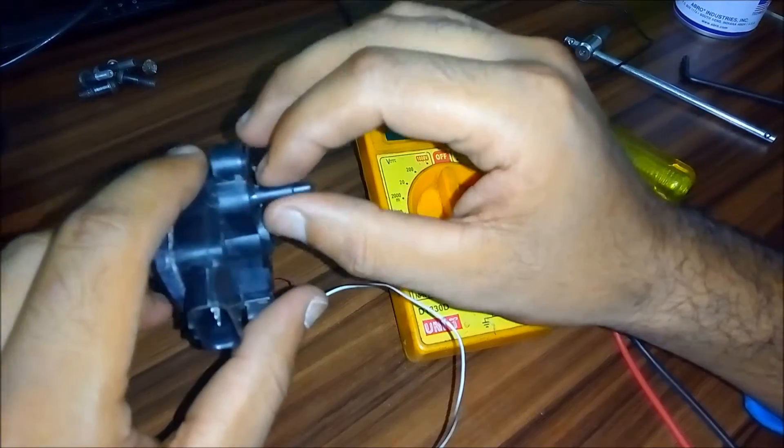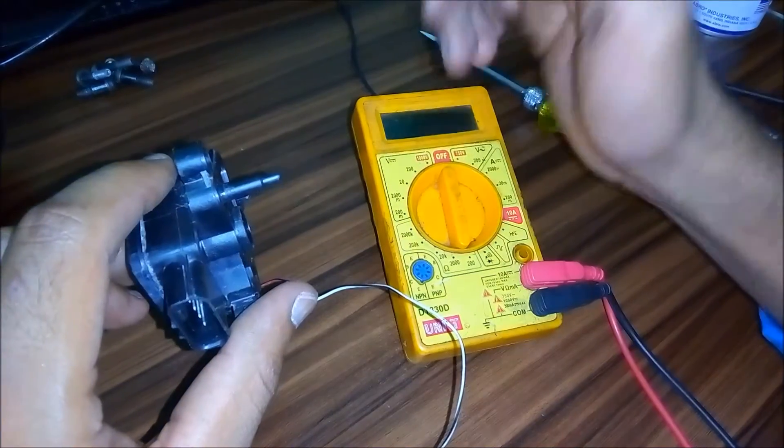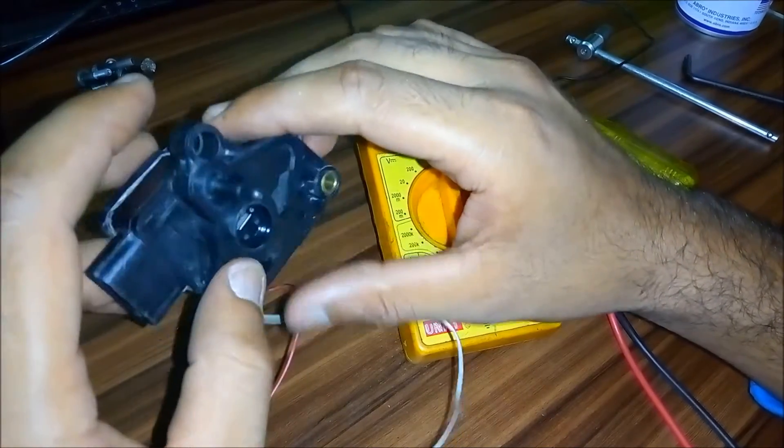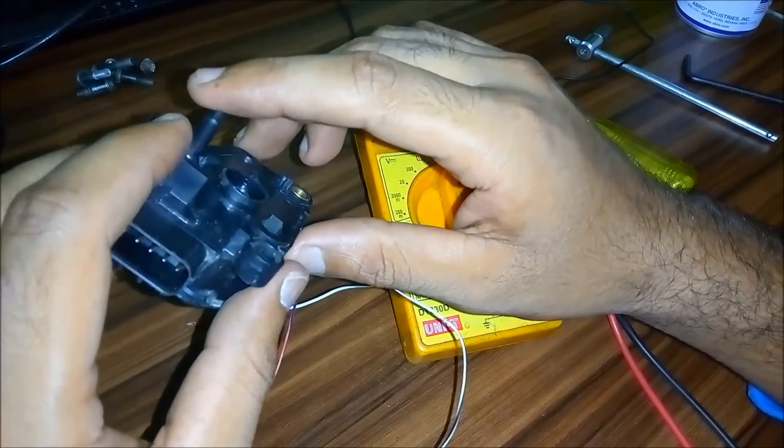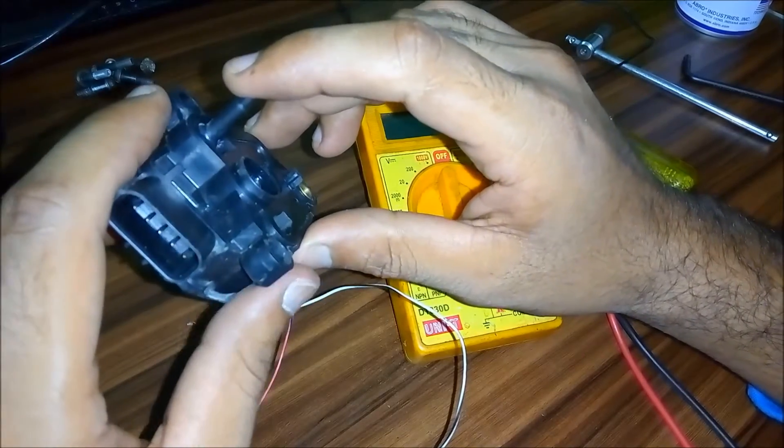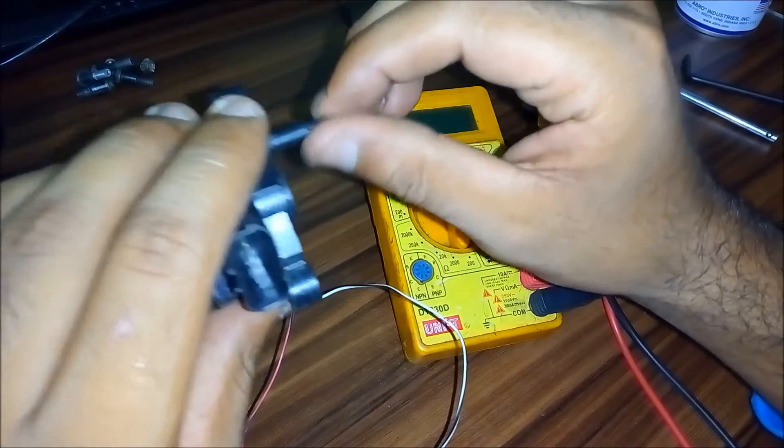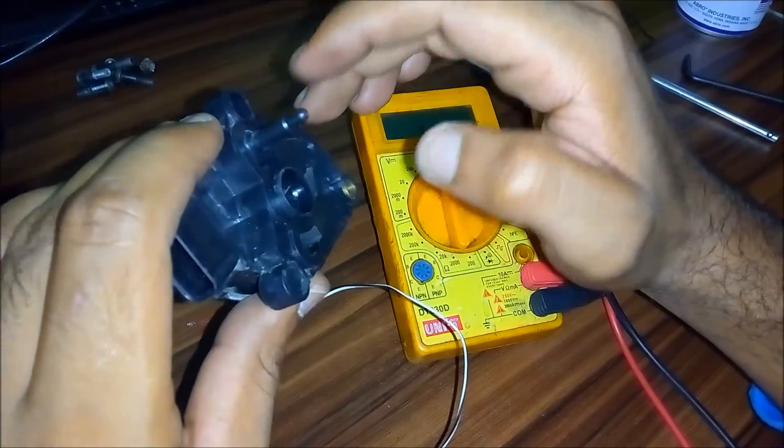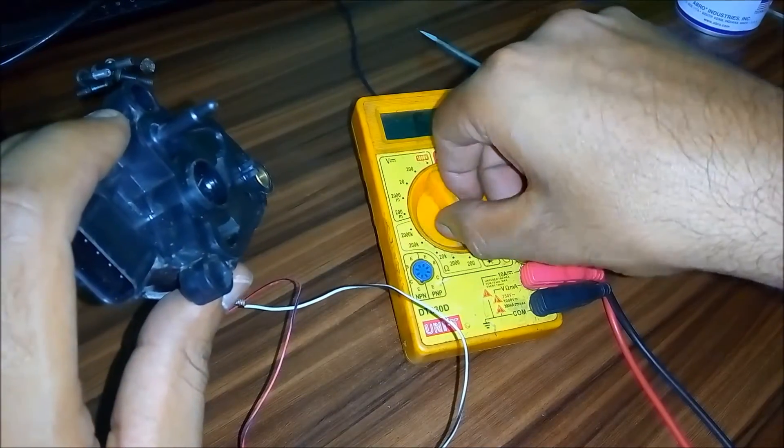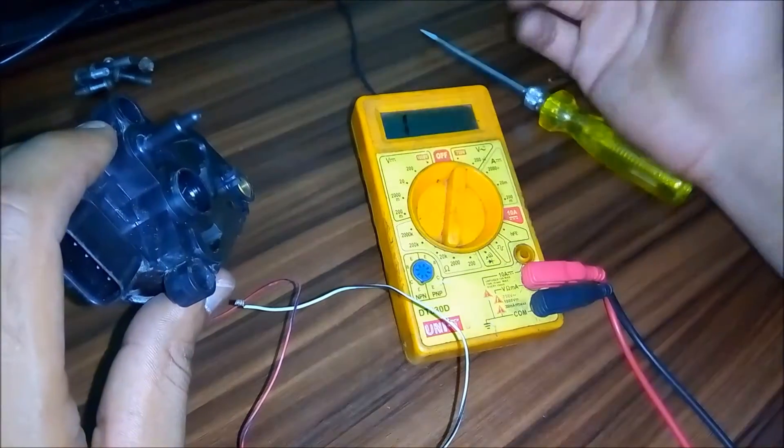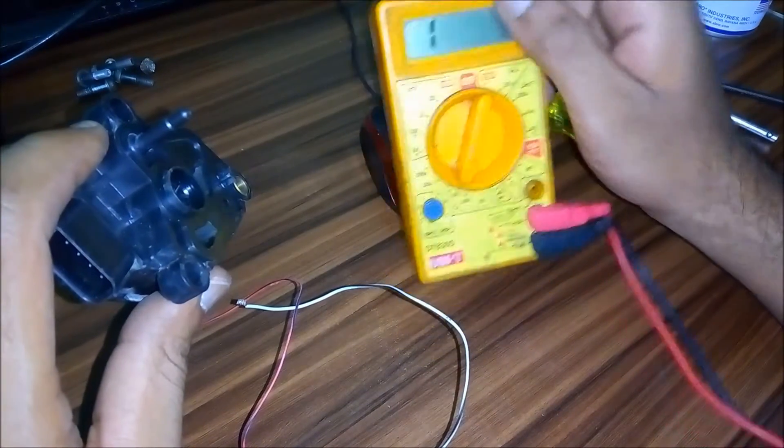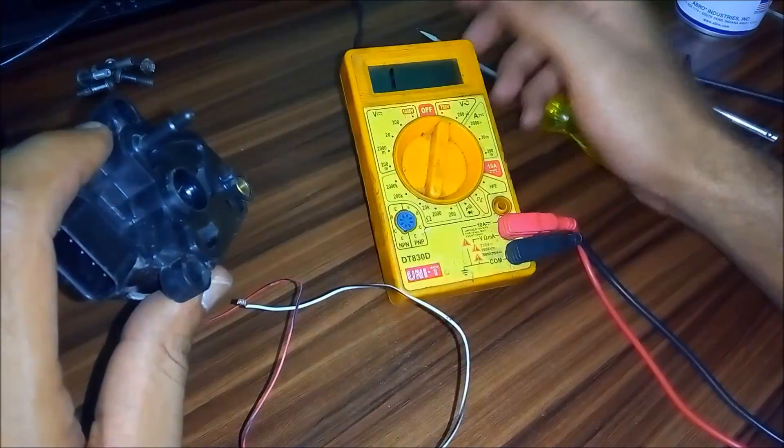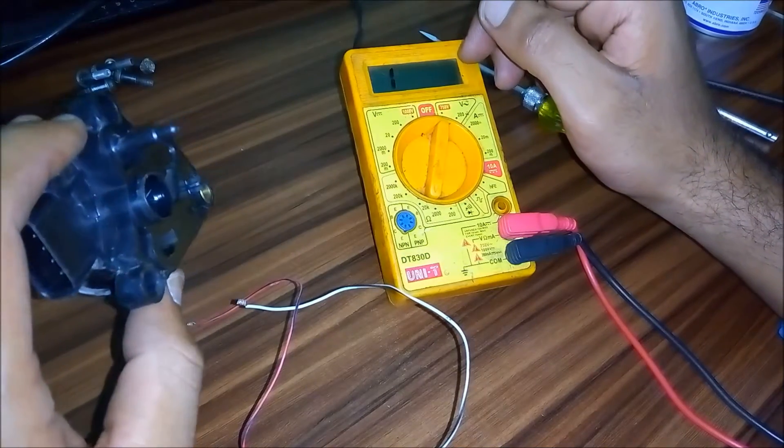Today I'm going to show you how to check this thing by using a multimeter. This thing right here determines the temperature of the oncoming air that goes right into your cylinder. Right now the room temperature is 25 degrees, so let me just set it up on 2000 ohms and we'll see how much resistance we'll be getting at 25 degrees.